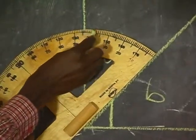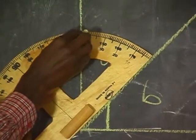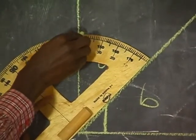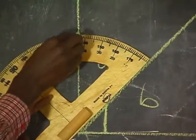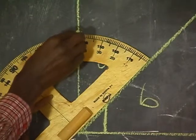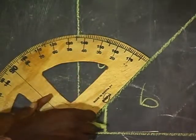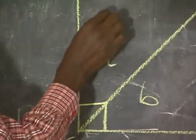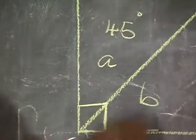Since this is 40, I come from 40: the first tick is 41, the second gives me 42, 43, 44, and then 45. So as you can see, the size of the angle marked A is 45 degrees.